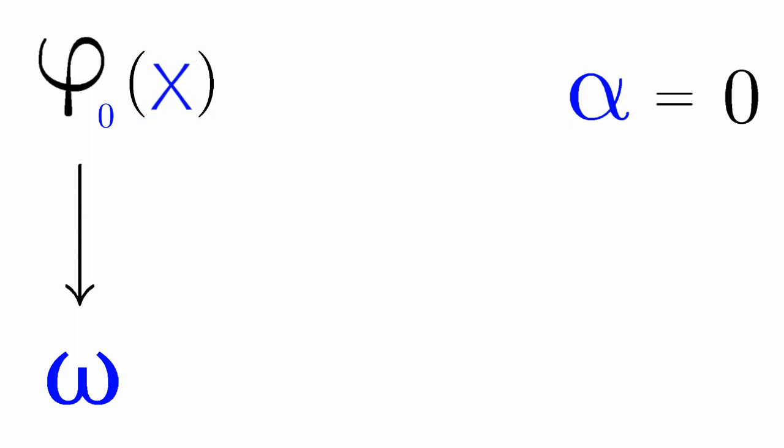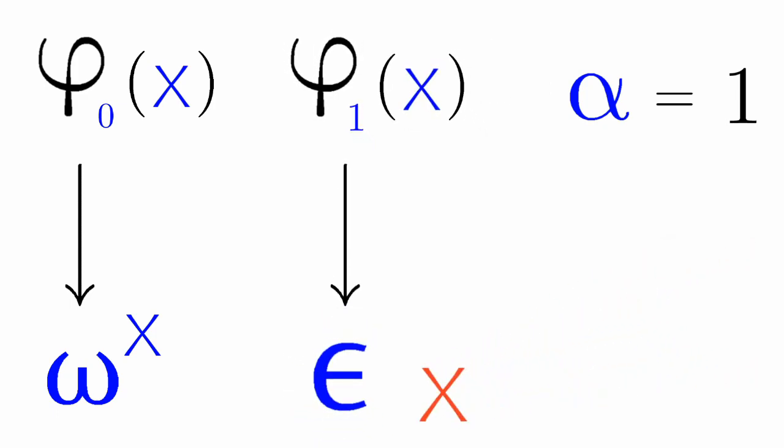Let's just have an X. This is the index of Omega. When Alpha is equal to 1, that's Phi 1 X. This is equal to Epsilon sub X. Then, Phi 2 X is equal to Zeta X.